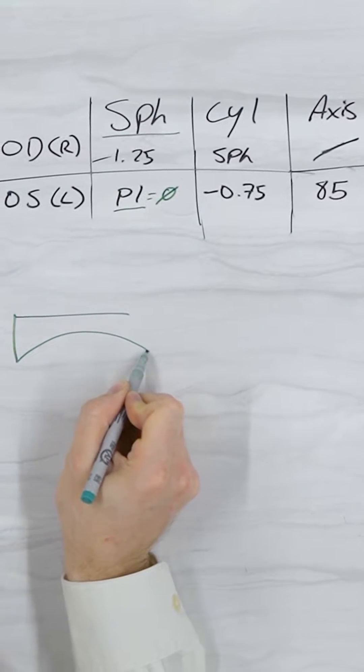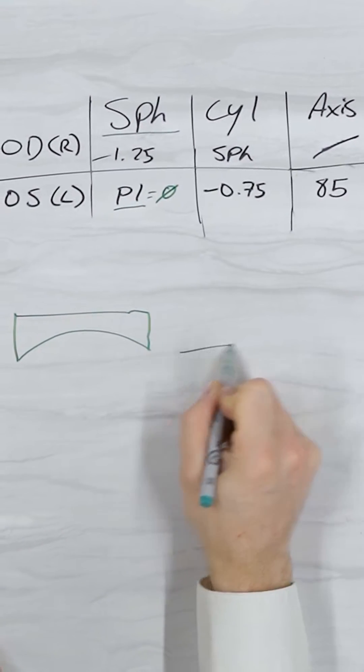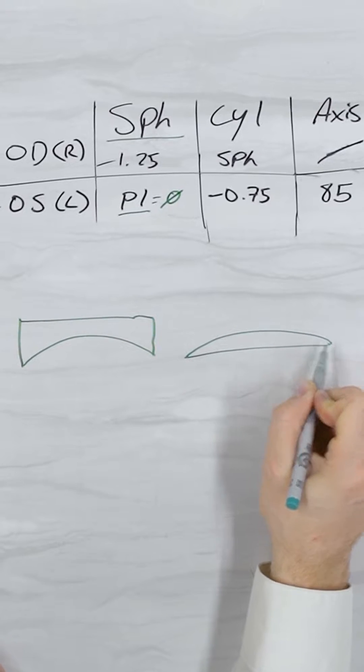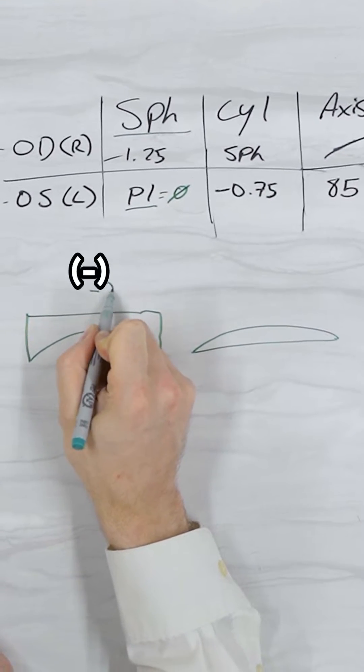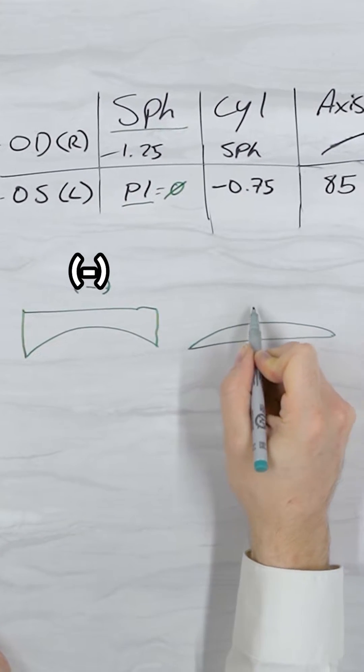The sphere can be either a minus or a plus number. The difference is the shape of the lens shown here. The minus lens is shown on the left and the plus lens is shown on the right.